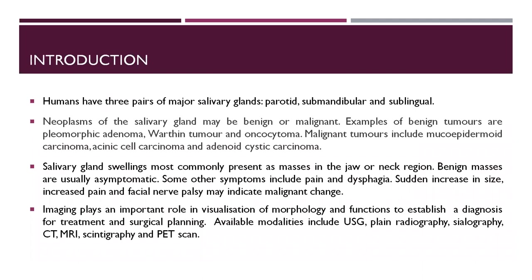Humans have three pairs of major salivary glands: parotid, submandibular, and sublingual. Neoplasms of the salivary gland may be benign or malignant. Examples of benign tumors are Pleomorphic Adenoma, Warthin's Tumor, and Oncocytoma. Malignant tumors include Mucoepidermoid Carcinoma, Acinic Cell Carcinoma, and Adenoid Cystic Carcinoma.